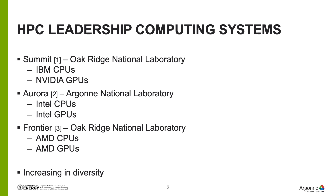The U.S. Department of Energy leadership computing facilities are currently using and will continue to use GPU-accelerated systems for the next wave of HPC computing. The current system, Summit at Oak Ridge National Laboratory, utilizes IBM CPUs and NVIDIA GPUs, while the upcoming system Aurora at Argonne National Laboratory will utilize Intel CPUs and Intel GPUs. Oak Ridge's next system, Frontier, will utilize AMD CPUs and AMD GPUs, showing an increase in diversity in the GPUs used for scientific computing.